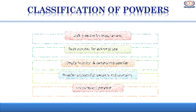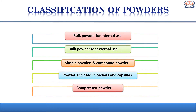The next point is classification of powders. Powders are broadly classified into 5 different classes: bulk powder for internal use, bulk powder for external use, simple and compound powder, powder enclosed in cachets and capsules, and lastly compressed powders. One by one, we have to discuss all these classes in detail.